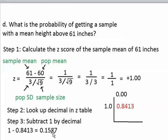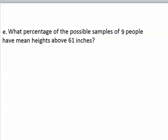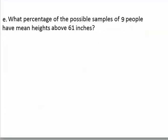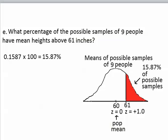So the probability that the sample of 9 people will end up having a sample mean above 61 is 0.1587. And if we want to change the probability to a percentage, we just multiply it by 100.